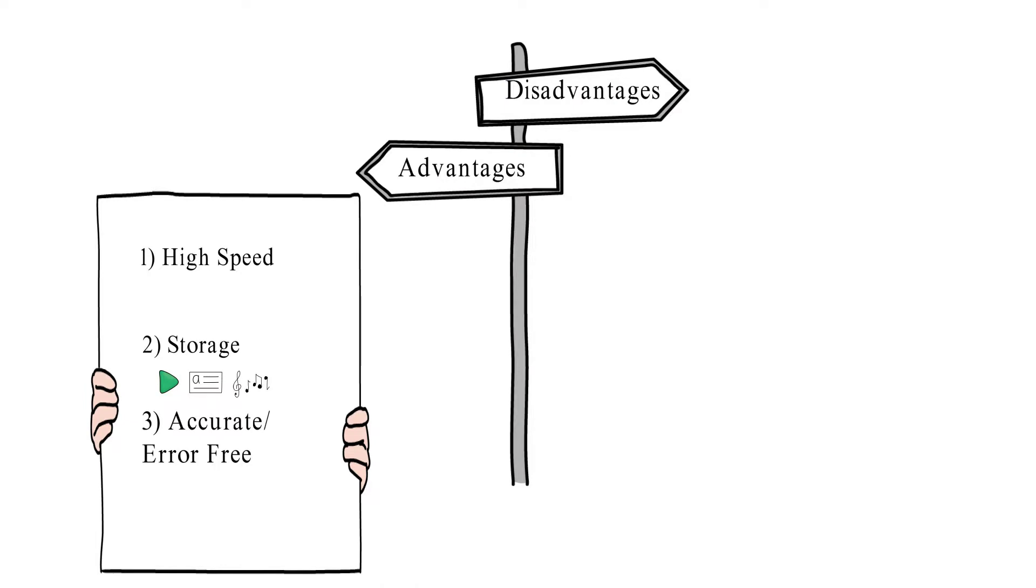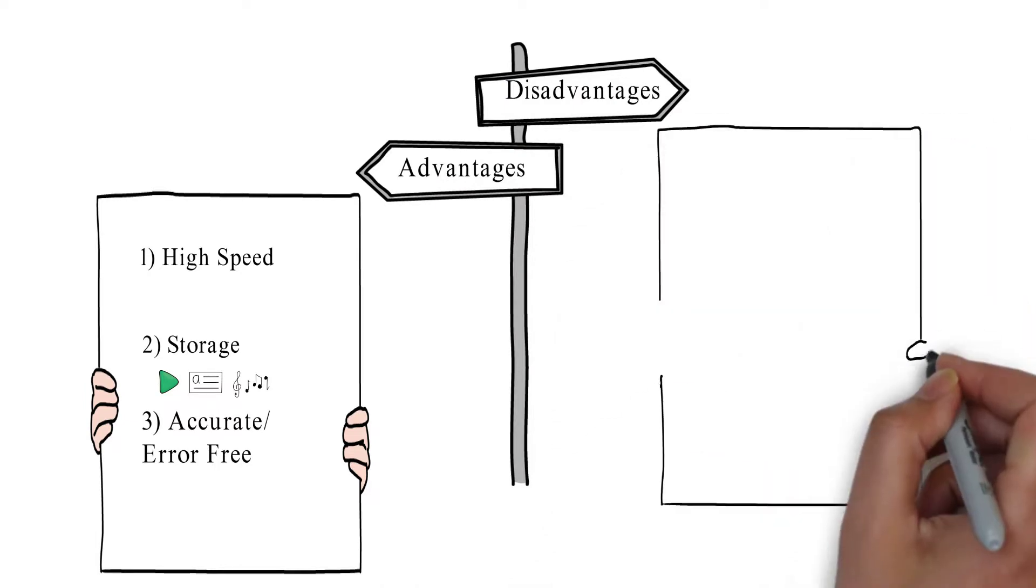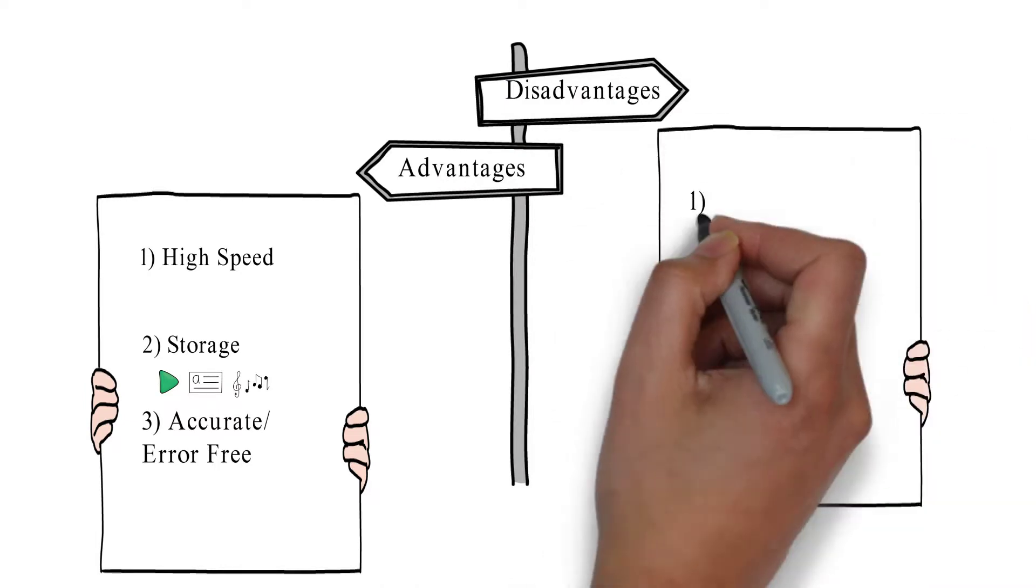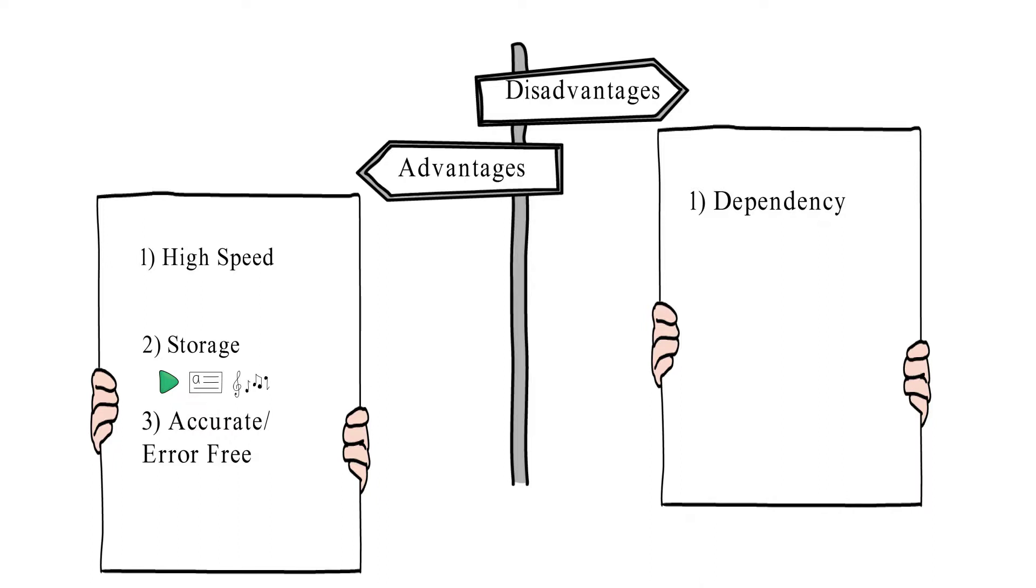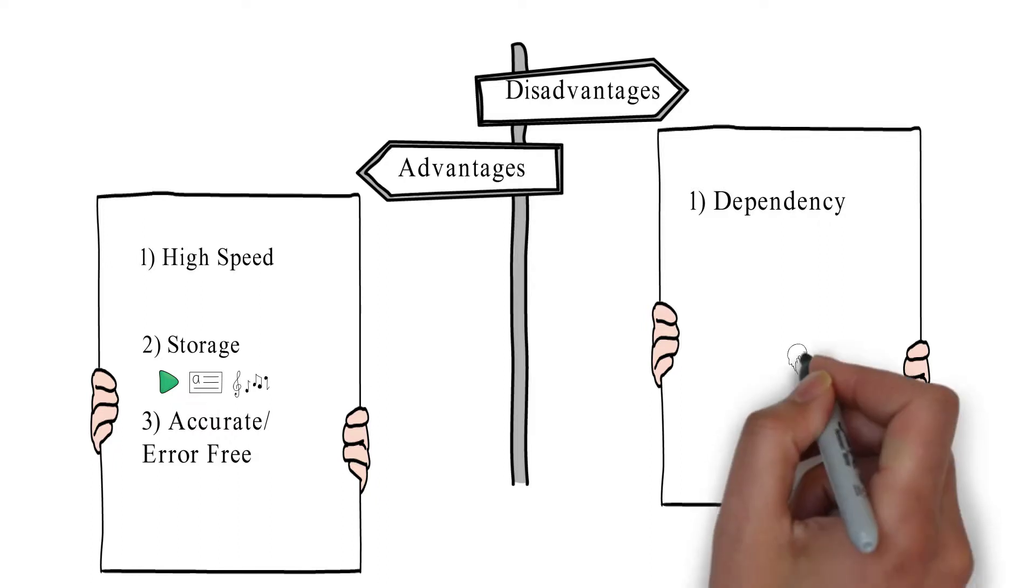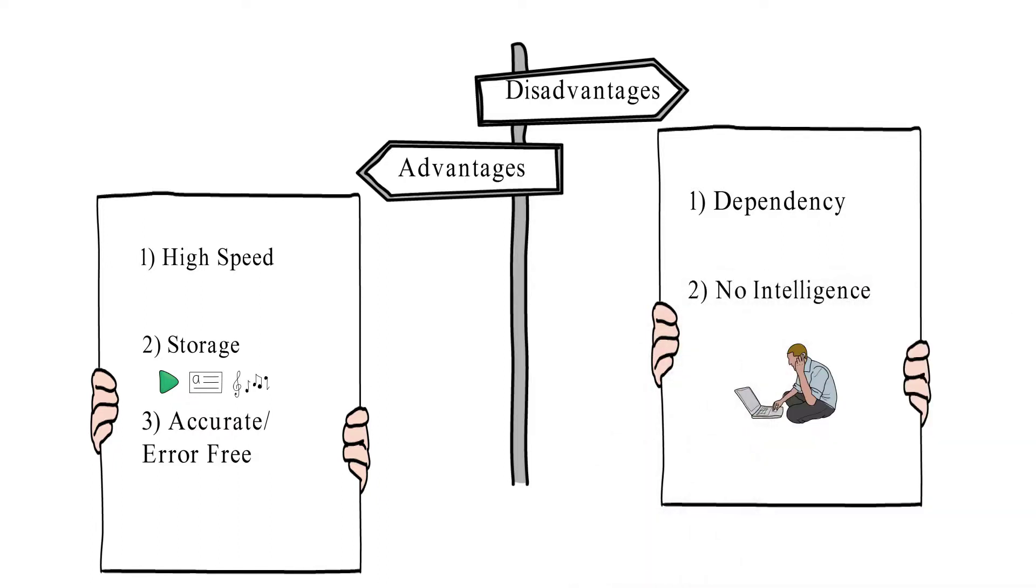Disadvantages. Number one, dependency. It is totally dependent upon the human only. Number two, no intelligence. Computer has no intelligence to perform any task by its own.